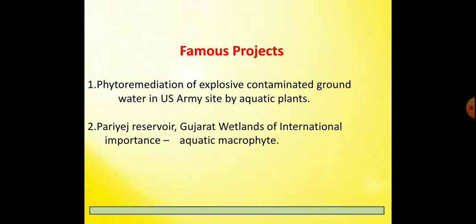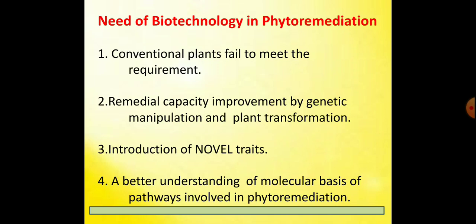Are there projects functioning in the world? Yes, there are many such projects where plants are used to remove dangerous contaminants. For example, phytoremediation of explosive-contaminated groundwater at a US Army site, where aquatic plants are used to remove explosive contaminants. Another example from India is the Periyar reserve located in Gujarat, where aquatic microphytes are used to remove contaminants.